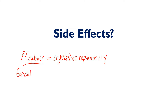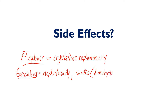Ganciclovir also causes nephrotoxicity, but not crystalline nephrotoxicity. On top of that, ganciclovir causes a decrease in all white blood cells, or sometimes just a decrease in neutrophils, and it can cause a decrease in platelets. It doesn't necessarily affect red blood cells directly, so it's not quite pancytopenia, but it definitely causes significant bone marrow suppression.